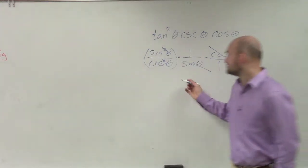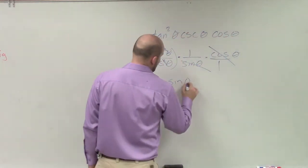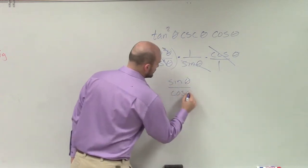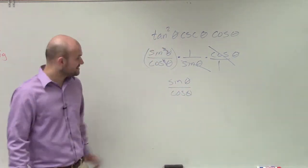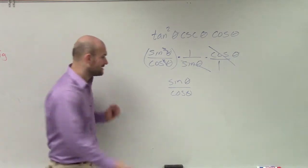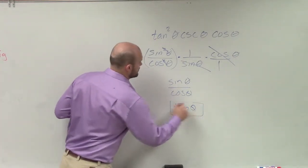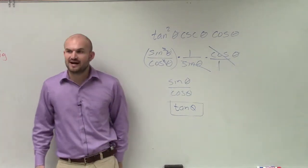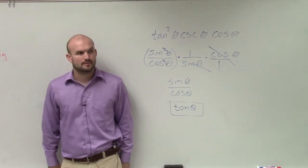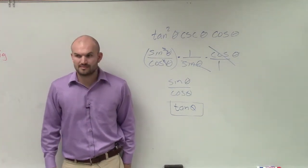Therefore, you guys can see I'm just left with sine theta over cosine theta. And I can simplify sine theta over cosine theta as tangent theta. So that would be my simplified answer. Make sense? Kind of? Maybe a little bit?